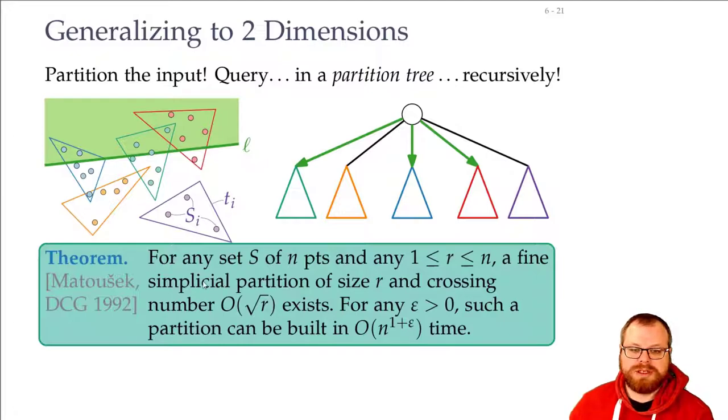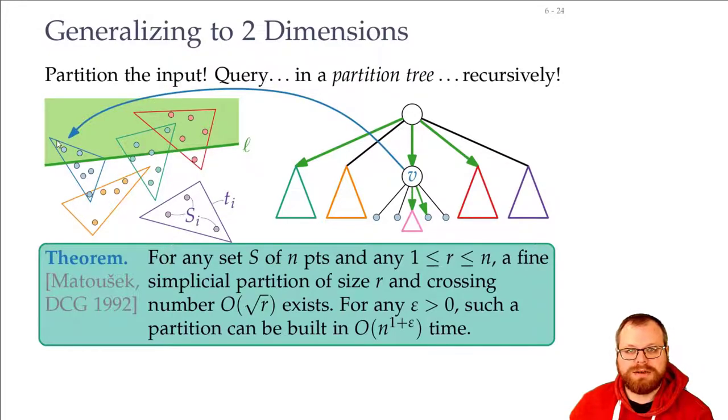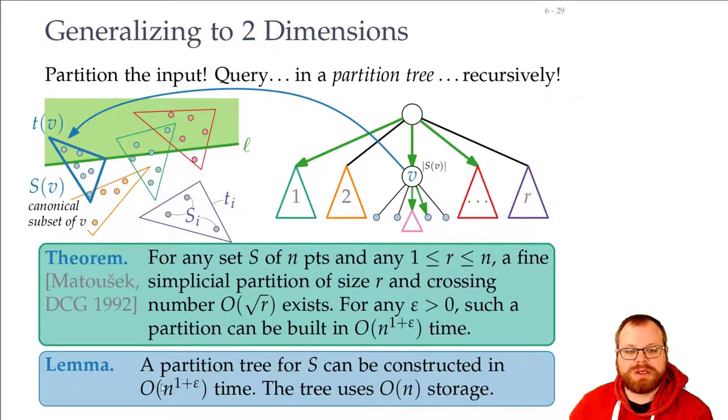Now if we get such a simplicial partition, we want to create our partition tree. How do we do that? If we look at the partition tree here, this node v corresponds to this triangle here. And inside this triangle, we can again use the simplicial partition to get the smaller triangle. Then we again augment all these nodes with the number of points that lie inside this triangle. So here we augment the size of the canonical subset of v. And with this algorithm, we can build the partition tree in the same time, also order of n to the 1+ε. And this uses order of n storage.